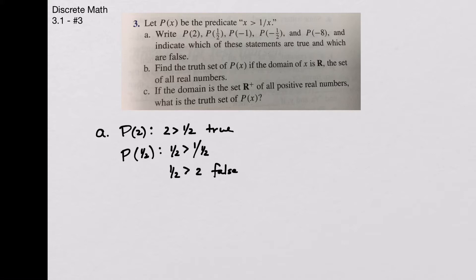Next is P(-1), and that says that -1 is greater than 1 over -1, which again, if I simplify, just says that -1 is greater than itself, which has to be false.